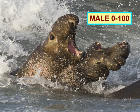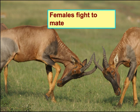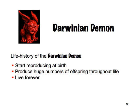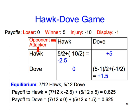We'll also look at animal mating systems, including these male seals that fight over females, and these female antelope that fight over males. And we'll discover why there's really no such thing as a Darwinian demon.